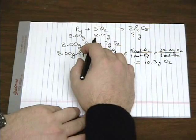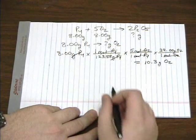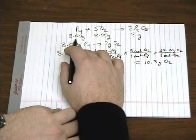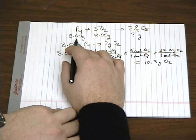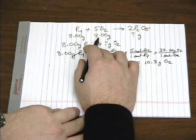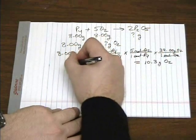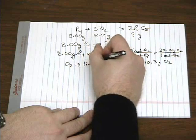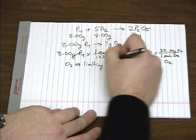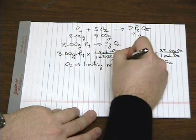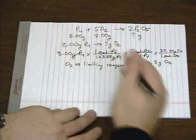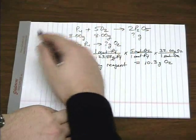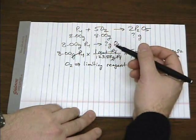But if you look, we only have 8 grams of oxygen. So not all 8 grams of phosphorus is going to react because we have a limited amount of O2. So oxygen is called our limiting reagent because it limits how much of the other can actually react.